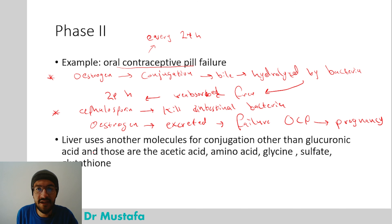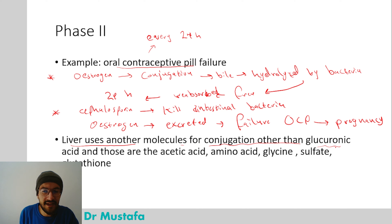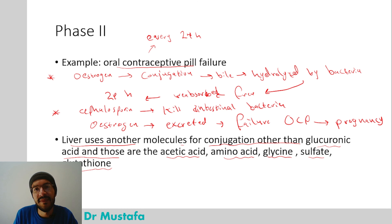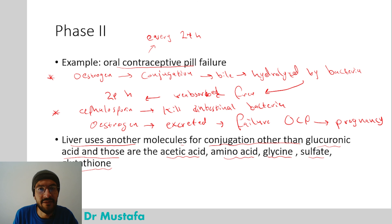A final note: the liver also uses other molecules for conjugation besides glucuronic acid, including acetic acid, amino acids like glycine, sulfate, and glutathione. With that, we reach the end of this video. Thank you for watching — please like and subscribe, and you can support the channel by subscribing via the Patreon link in the description.